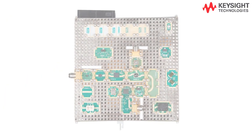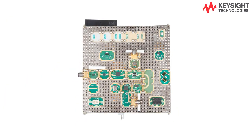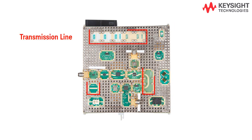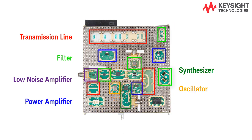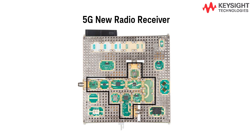The teaching solution has seven labs, which guides students through each component: transmission line, filter, low noise amplifier, power amplifier, oscillator, synthesizer, mixer, and ultimately build up a 5G radio receiver.